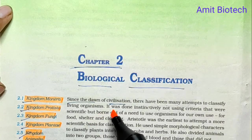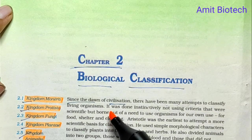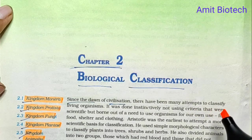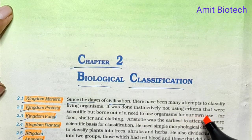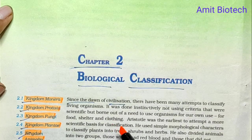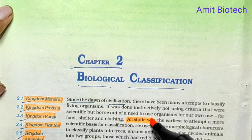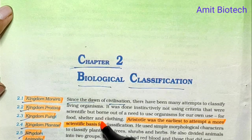Since the dawn of civilization, there have been many attempts to classify living organisms. During the early period, classification was done not using strictly scientific criteria, but born out of a need to use organisms for our own purposes — for food, shelter, and clothing. Aristotle was the earliest to attain a more scientific basis for classification.